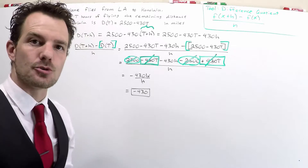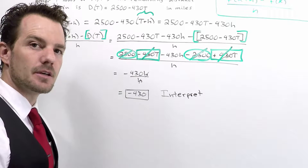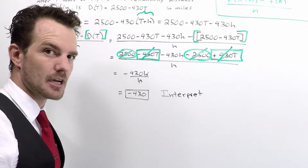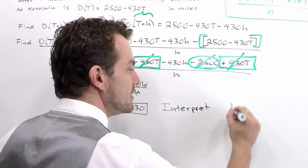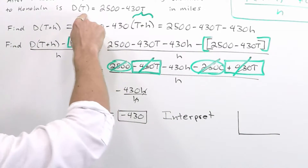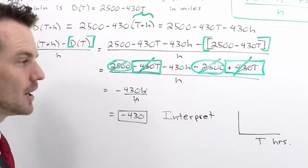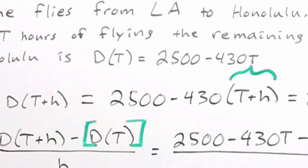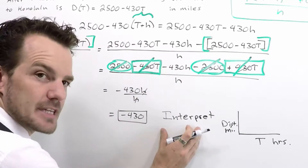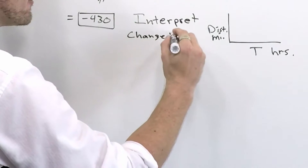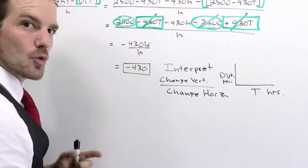When they ask you to interpret this, the interpretation is about how fast the output or y-values change divided by how fast the x-values change on the horizontal axis. So let's do a quick interpretation. If we drew this graphically, the input is T, meaning our horizontal axis is T — that's hours after we left LA. The vertical axis is the output, which is how far we are from Honolulu, so that's capital D for distance in miles.